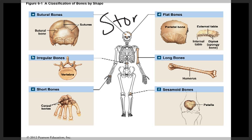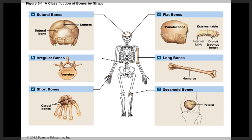Bones also provide storage of minerals and lipids. Calcium phosphate ions are stored in bone, and the yellow marrow in the medullary cavity of the bone stores fat cells for energy.